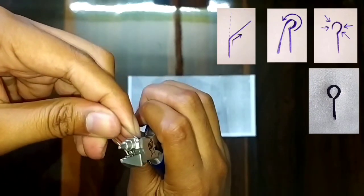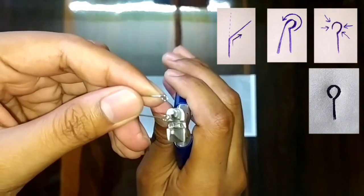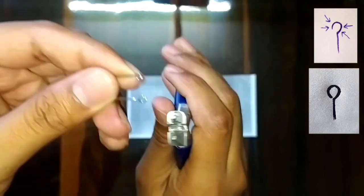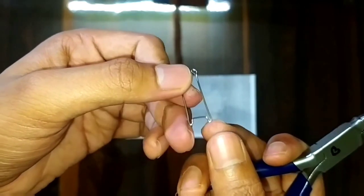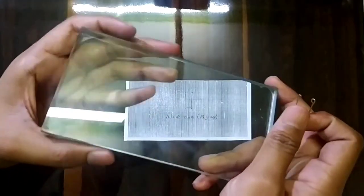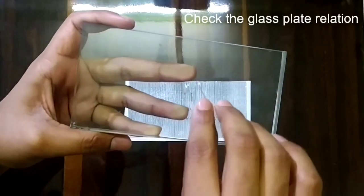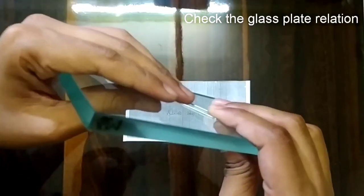In this way, our clasp is almost ready. We will check it whether it is in the same plane or not on the glass plate. We can see here that the retentive arm is little bit uplifted here and similarly on the other side too, it is not touching the glass plate.